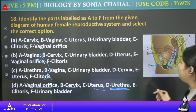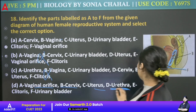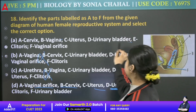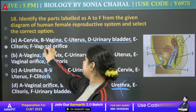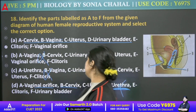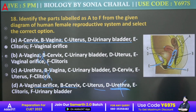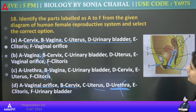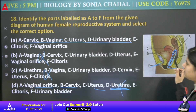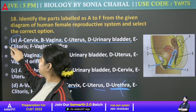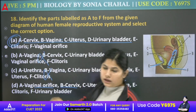D is urinary bladder. So urethra given is wrong. E is clitoris, C is vaginal orifice — yes, that is true. So our answer here will be the A option. It is a little complicated — but if you practice labeling questions, you will tackle them very easily with no problem.